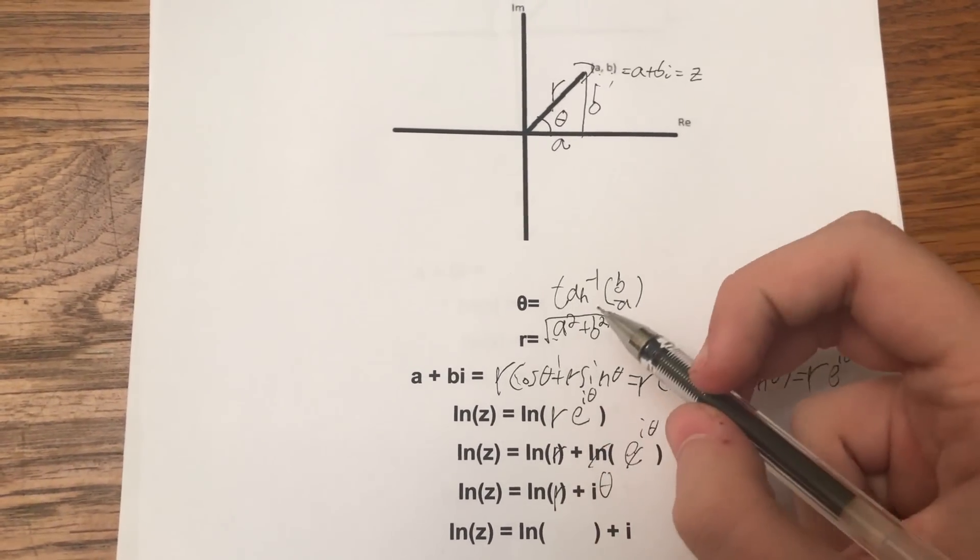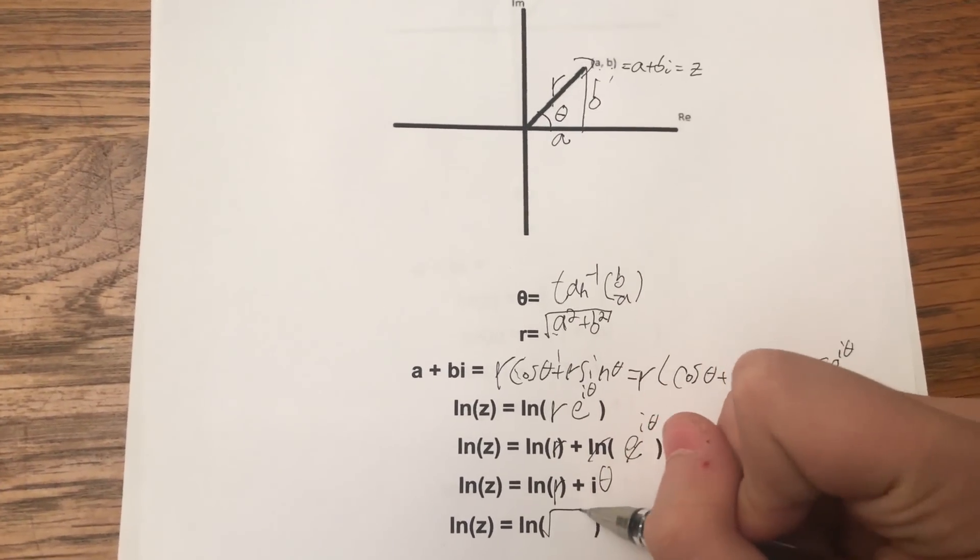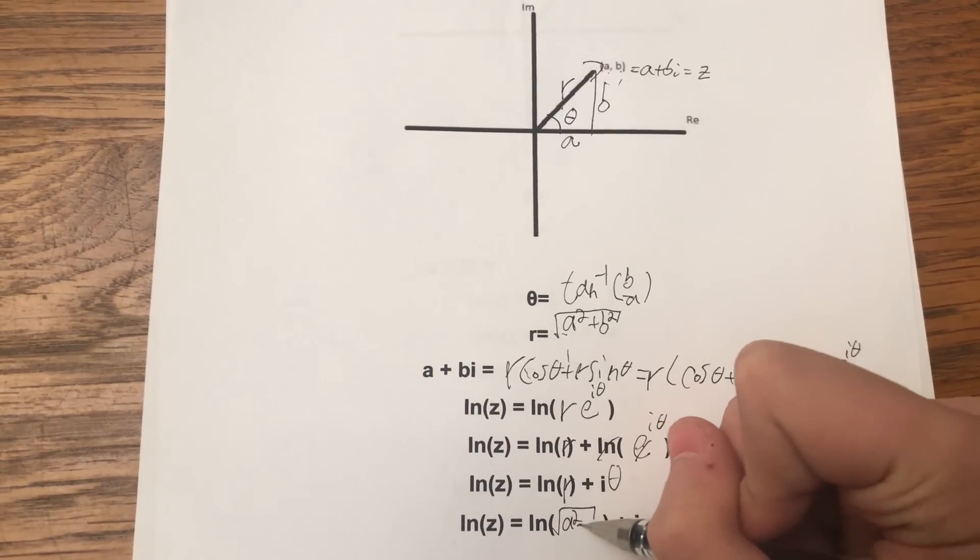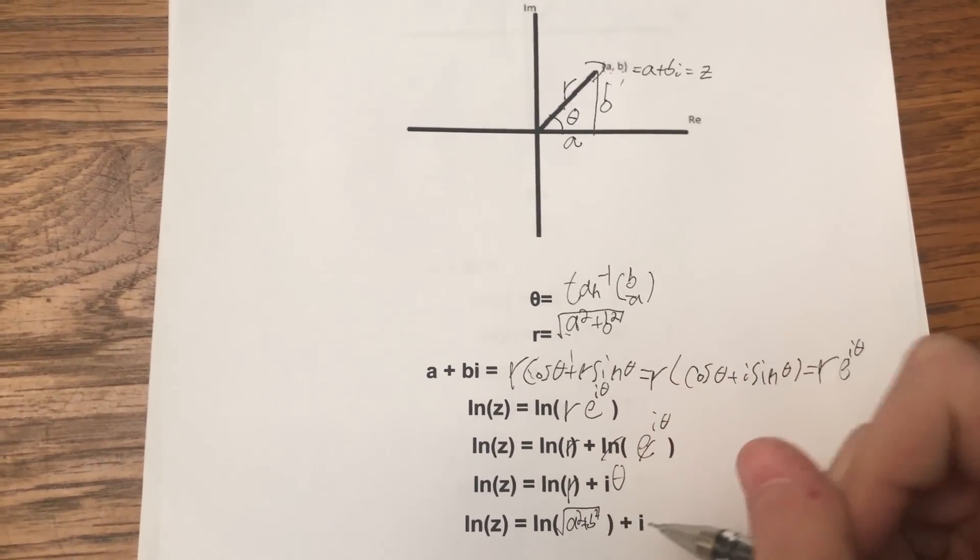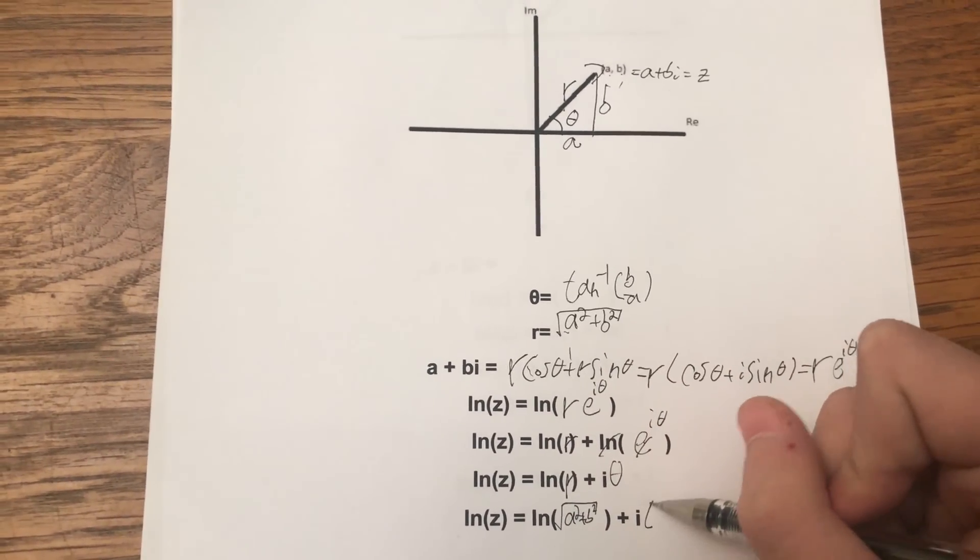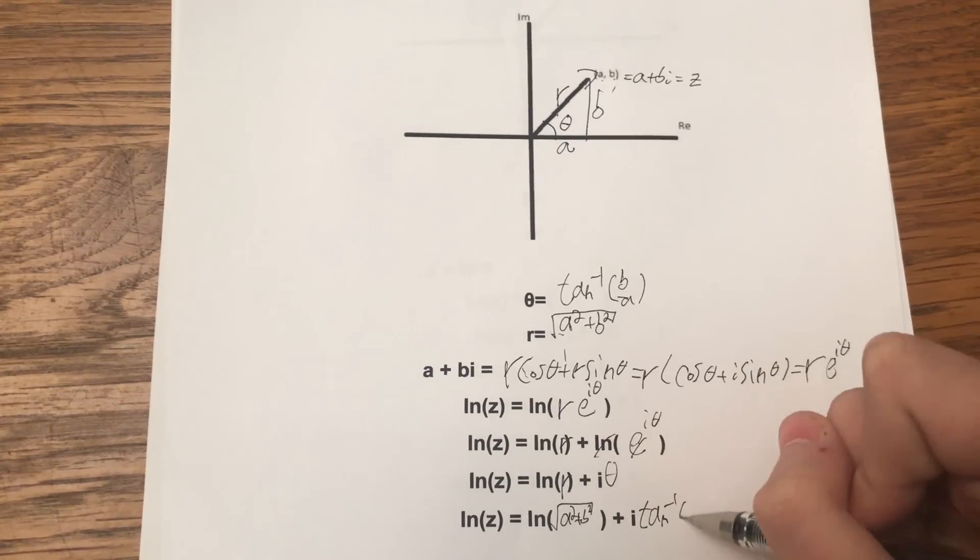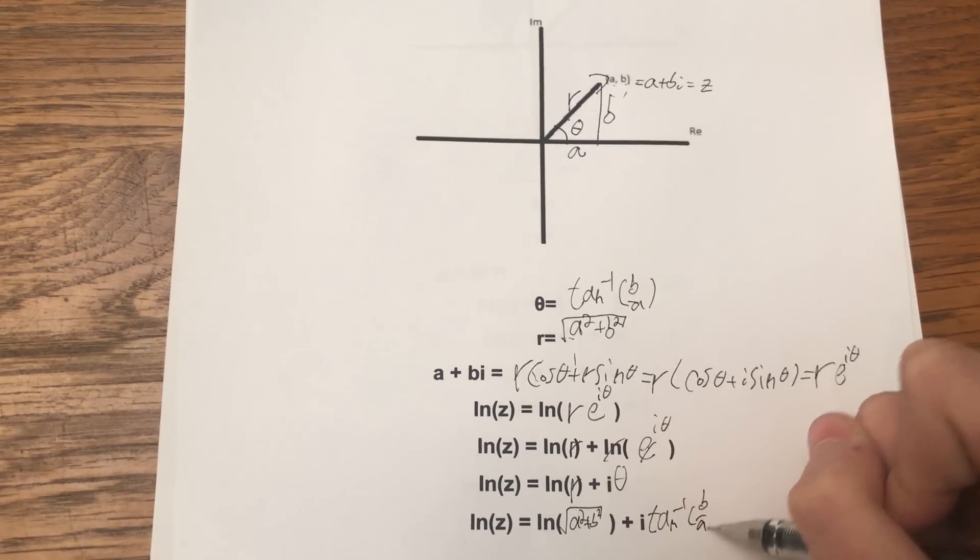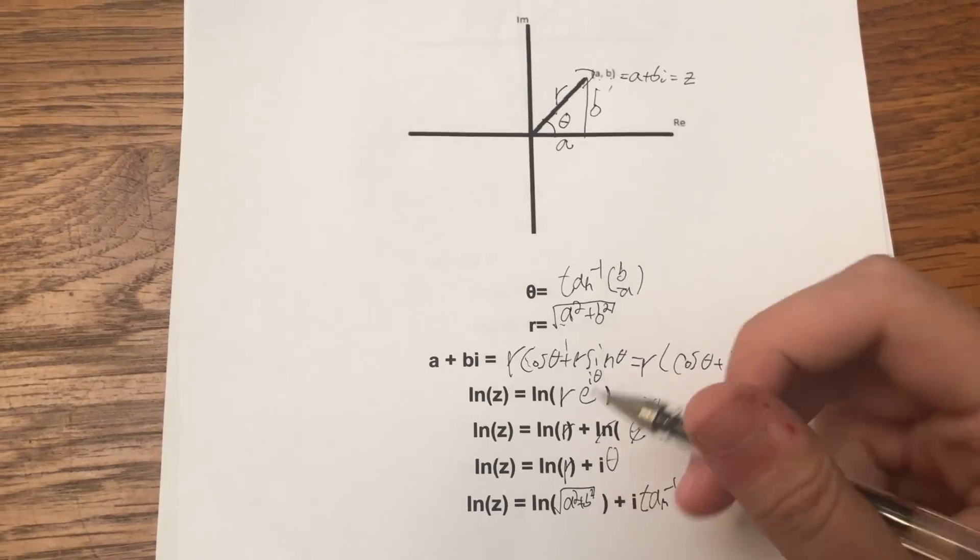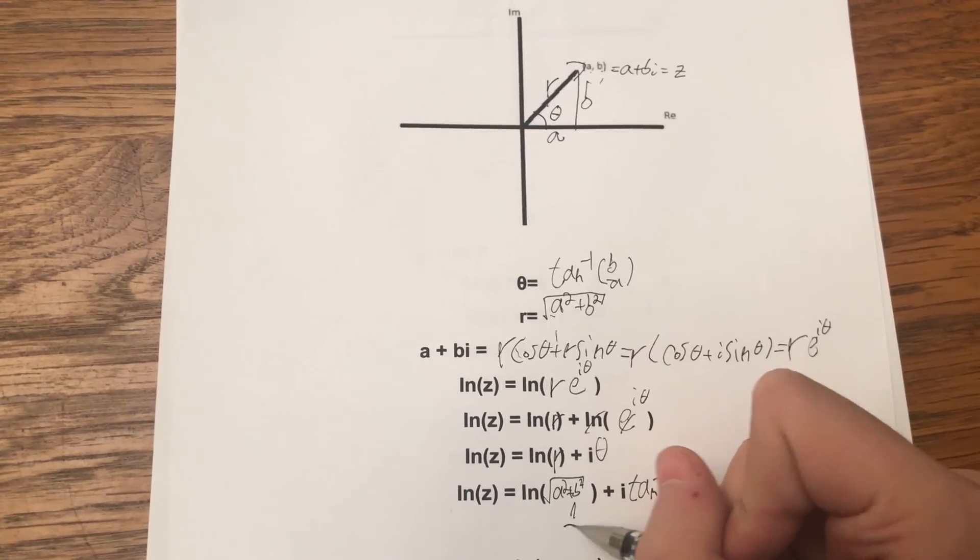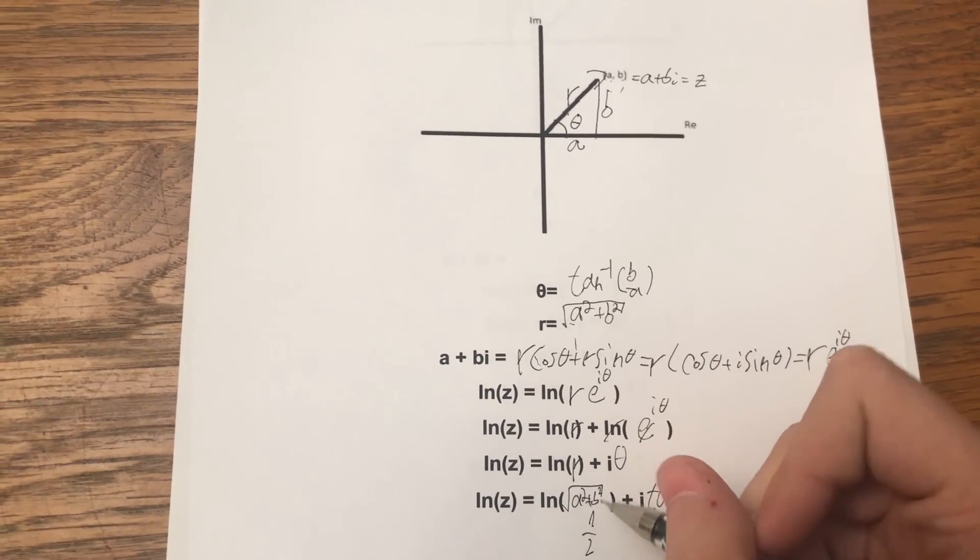Now, what's r? r is the square root of a squared plus b squared. Theta is inverse tangent of b over a. Now what is the square root function? It's actually a one-half power, right? So we can bring that to the front.